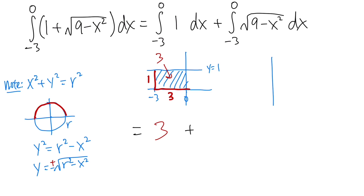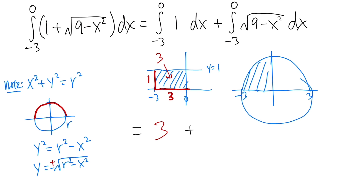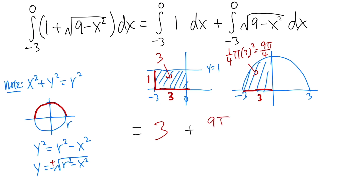So we know this function gives us a semicircle. The radius is 3 because 3 squared is 9. We care about the region from negative 3 to 0, which is a quarter of a circle. So the area is 1/4 times pi r squared. Pi is pi, and r is 3, so we get 1/4 times pi times 9, which is 9π/4. The second integral gives us 9π/4.